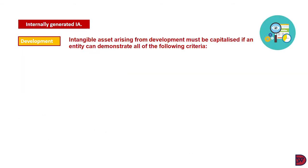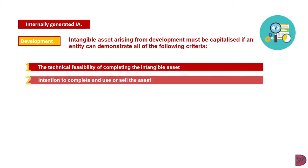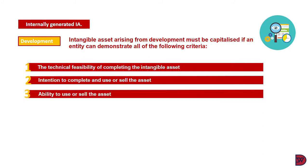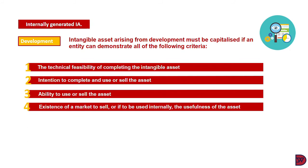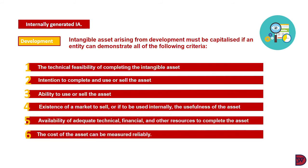An intangible asset arising from development must be capitalized if an entity can demonstrate all of the following criteria. One, the technical feasibility of completing the intangible asset so that it will be available for use or sale. Second, the entity has the intention to complete the asset for either usage or selling it off. Thirdly, the entity has the ability to use or sell the asset — that is, the entity will have the financial, technical, or manpower resource to use it. Fourth, existence of a market if it is to be sold, or the usefulness of the asset if it is to be used internally. Next, availability of adequate technical, financial, and other resources to complete the asset. And the last is that the cost of the asset can be measured reliably.